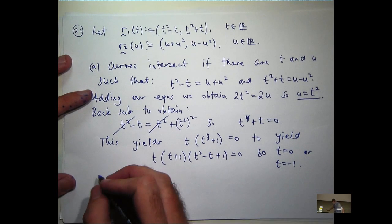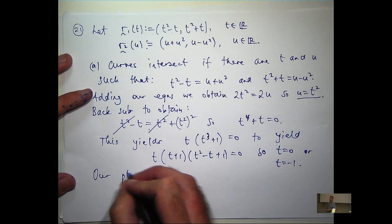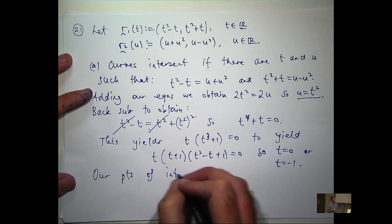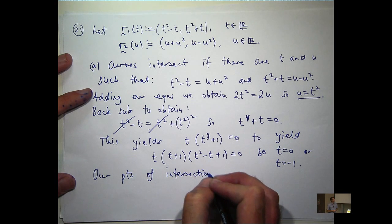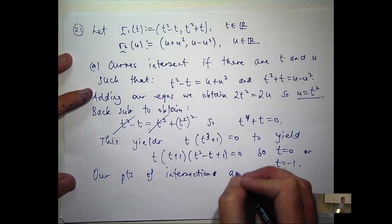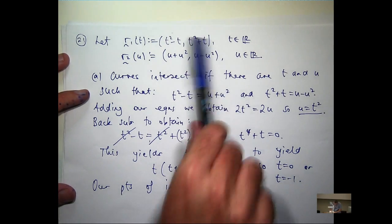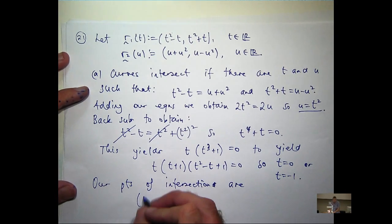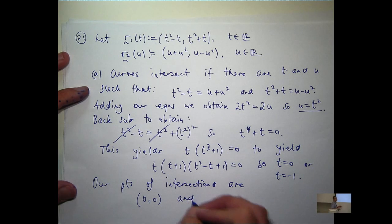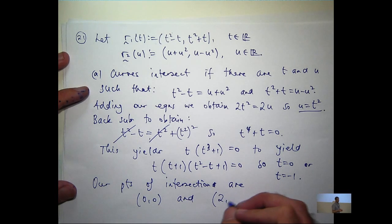So, our points of intersection are - all you do is you put t equals 0 in there, t equals minus 1 in there - 0, 0 and what's it going to be, 2, 0.